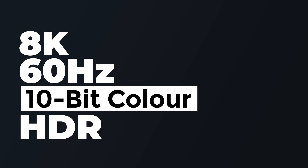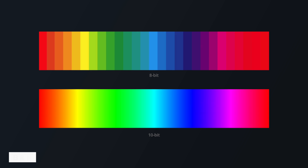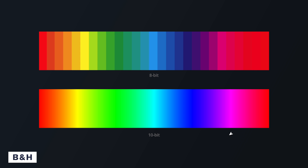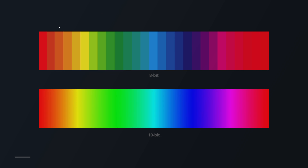In terms of color standards, DisplayPort 1.4 offered 8K at 60Hz with 10-bit color and HDR. A 10-bit color system can produce 1024 different shades of green, blue, and red to reproduce more than 1 billion unique colors. By comparison, DisplayPort 1.2 could only support 8-bit color, meaning it could only produce 16.7 million unique colors — quite a difference.